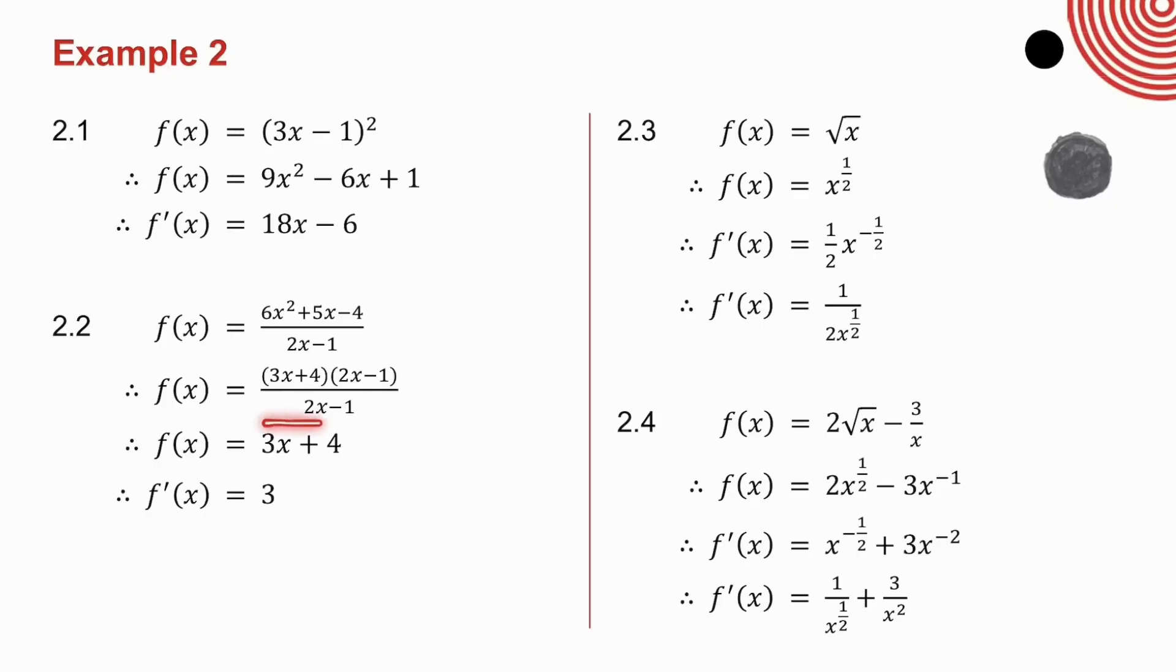In 2.2, I factorized the trinomial, and I canceled. Notice it's still f of x. Derivative of 3x is 3. Derivative of plus 4 is 0.